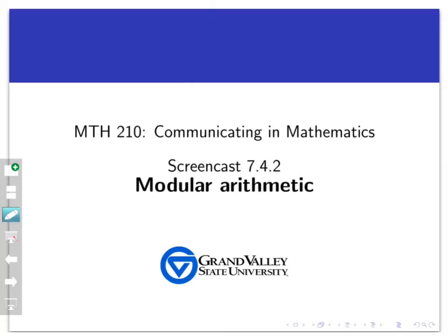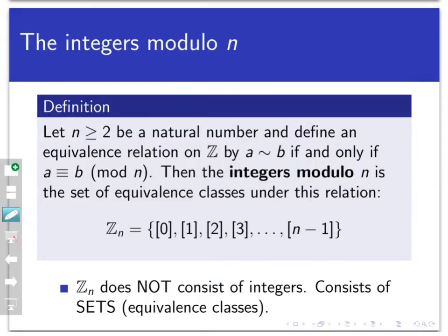Welcome back to another screencast on the integers mod n. Let's review: we defined the integers mod n by taking a natural number n greater than 1 and looking at the equivalence relation on the integers given by congruence mod n. This creates n distinct equivalence classes — the classes of 0, 1, 2, up to n minus 1. The class of n is the same as the class of 0, so there are exactly n classes in ℤ mod n.